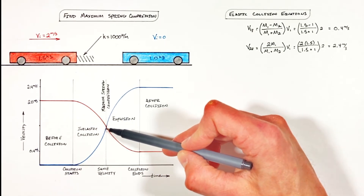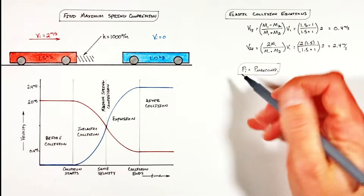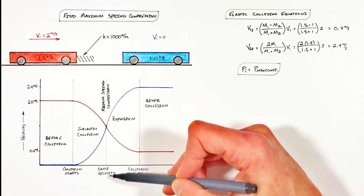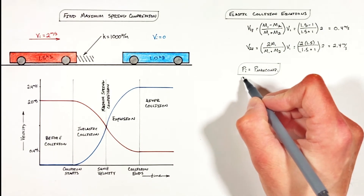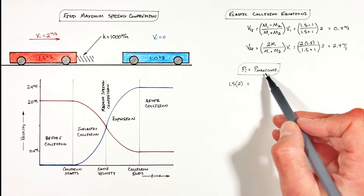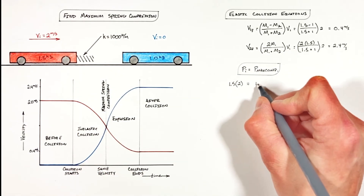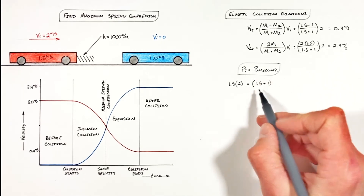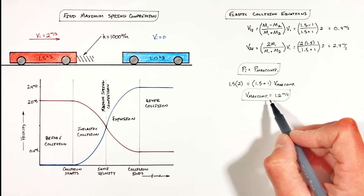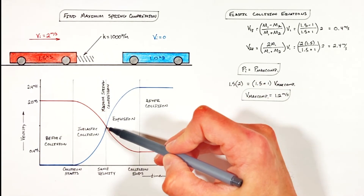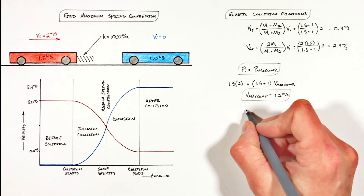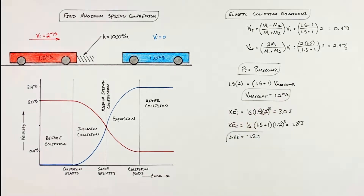We're going to use conservation of momentum for the inelastic collision to solve for the velocities of these two carts when they're traveling at the same speed. We set the linear momentum of the carts before the collision equal to the linear momentum when the spring is at maximum compression. Before the collision only the 1.5 kilogram cart was moving, so only the red cart had linear momentum. Once the spring reaches maximum compression, both carts are moving at the same velocity — I'm going to call that the velocity at maximum compression.